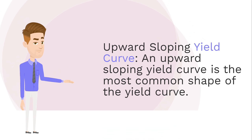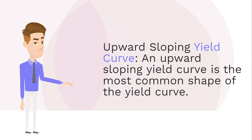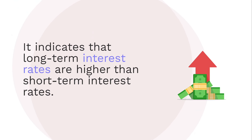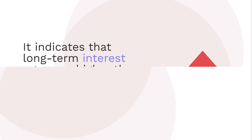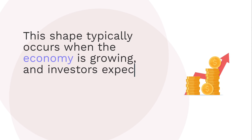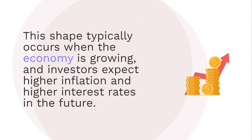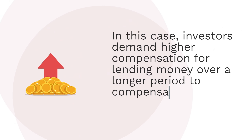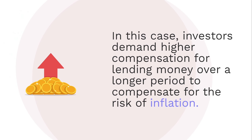An upward sloping yield curve is the most common shape of the yield curve. It indicates that long-term interest rates are higher than short-term interest rates. This shape typically occurs when the economy is growing, and investors expect higher inflation and higher interest rates in the future. In this case, investors demand higher compensation for lending money over a longer period to compensate for the risk of inflation.